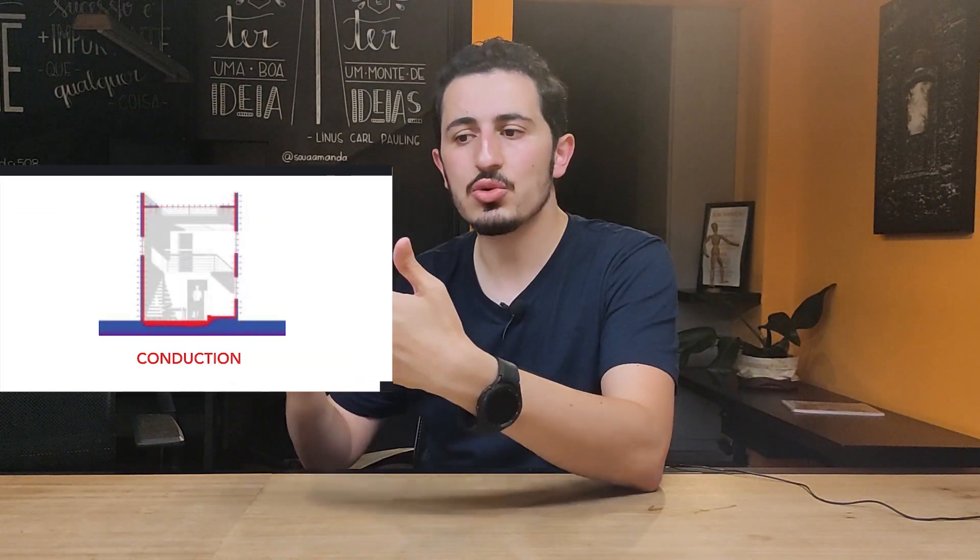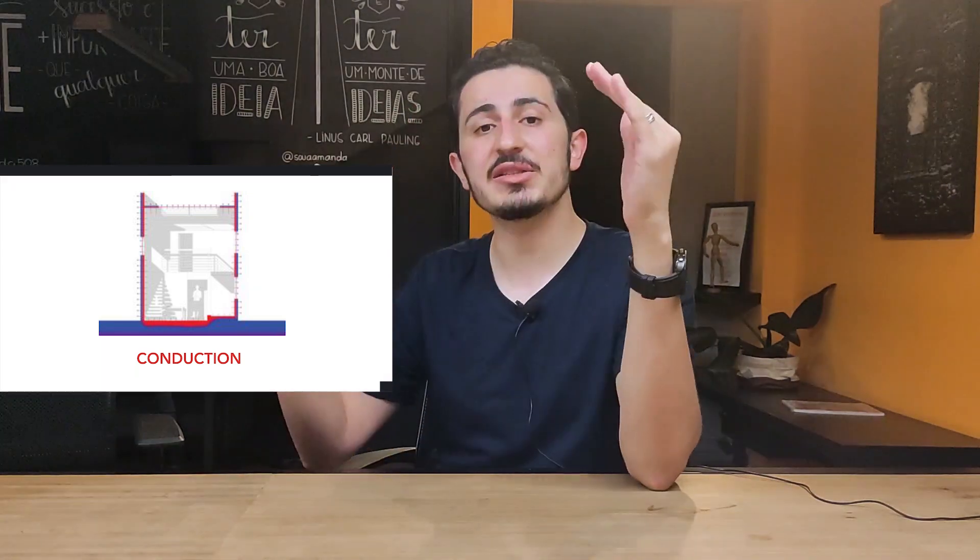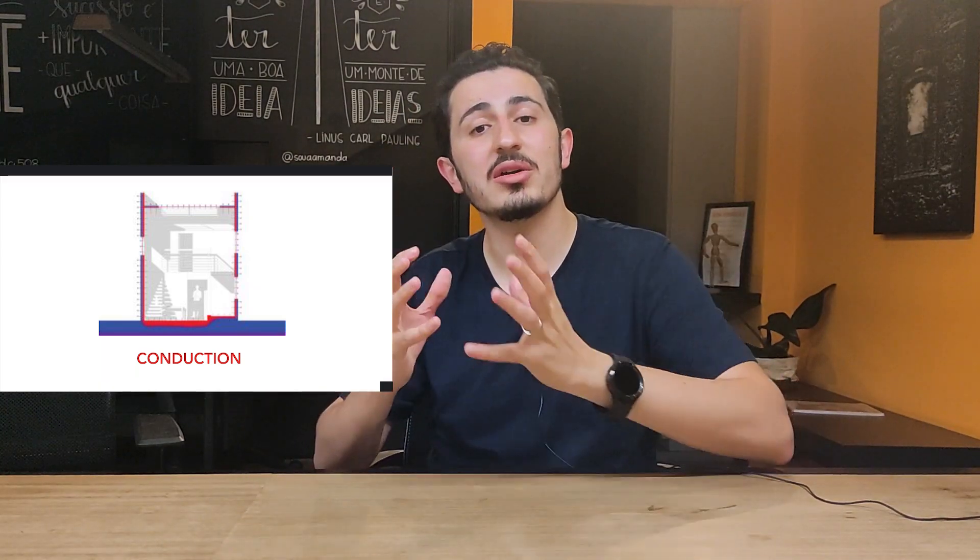Conduction occurs when heat moves through solid objects. We all know that if we have a hot object and we touch it with our cold hand, the heat will move into our hand — this is conduction. When objects touch each other and exchange energy through that contact, in buildings this occurs through the walls, floors, and ceilings, since these are the solid surfaces that lose or gain energy.